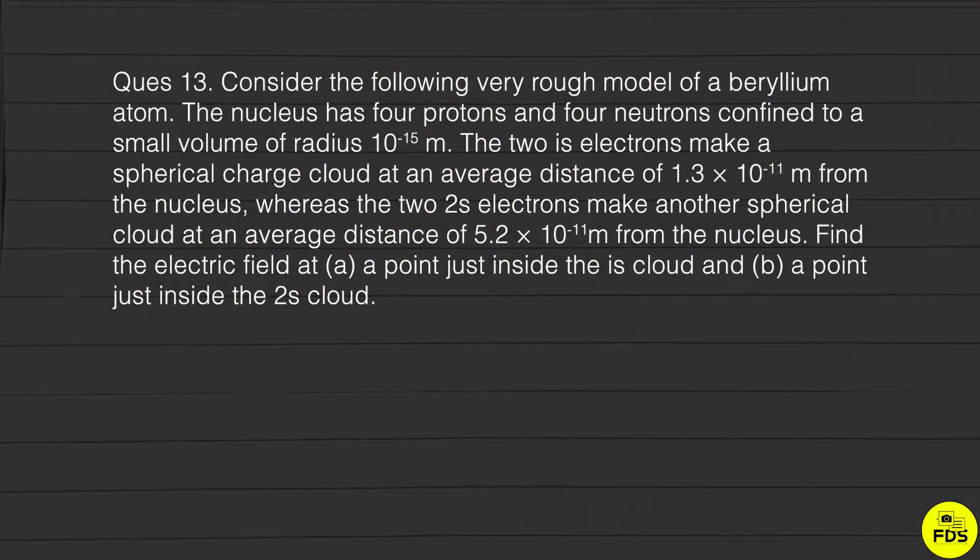This question considers a very rough model of a beryllium atom. The nucleus has four protons and four neutrons confined to a small volume of radius 10^-15 meters. The two 1s